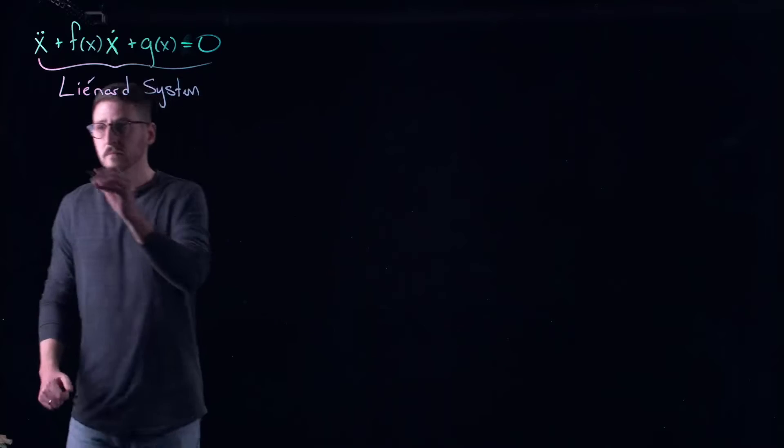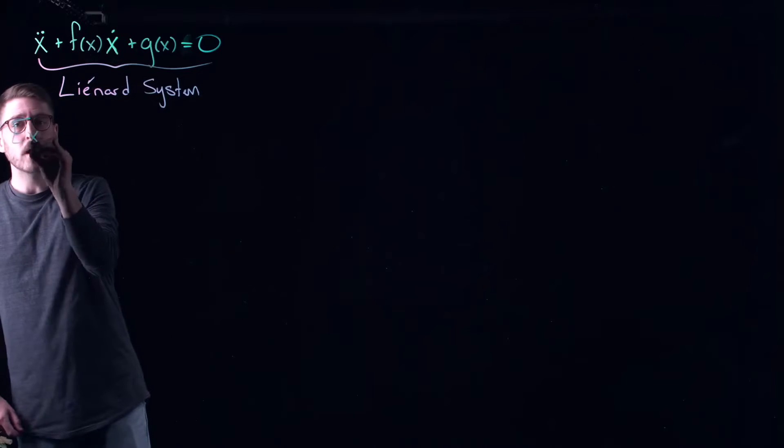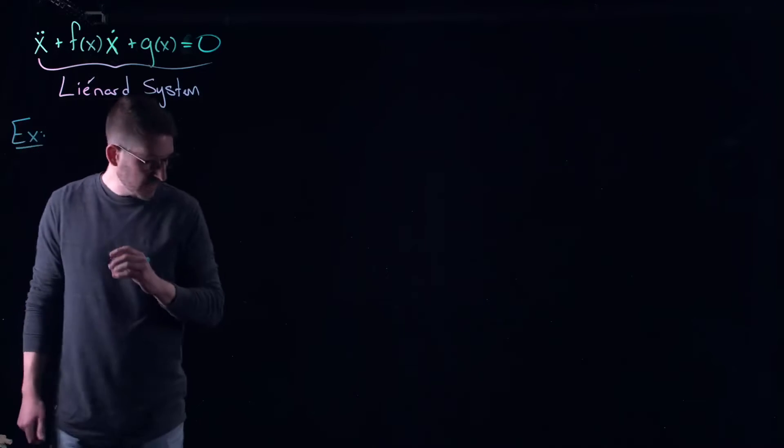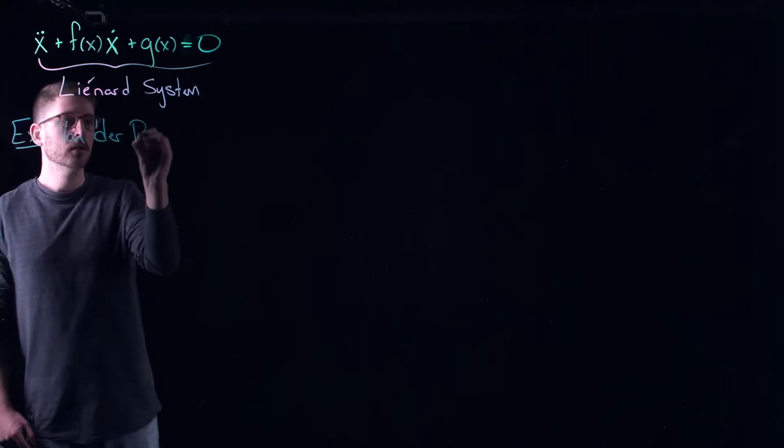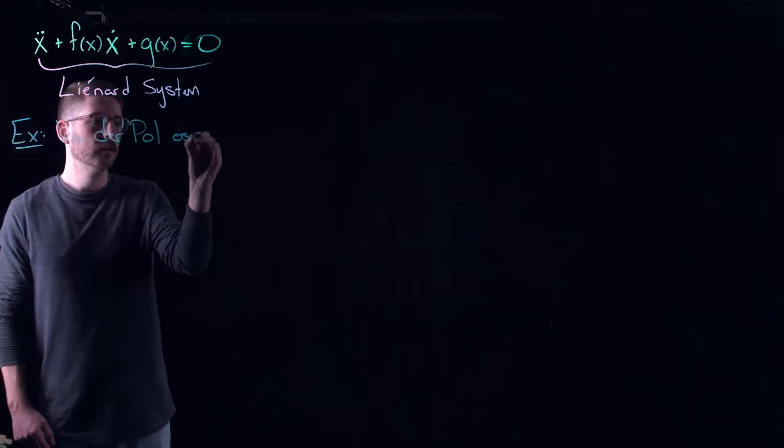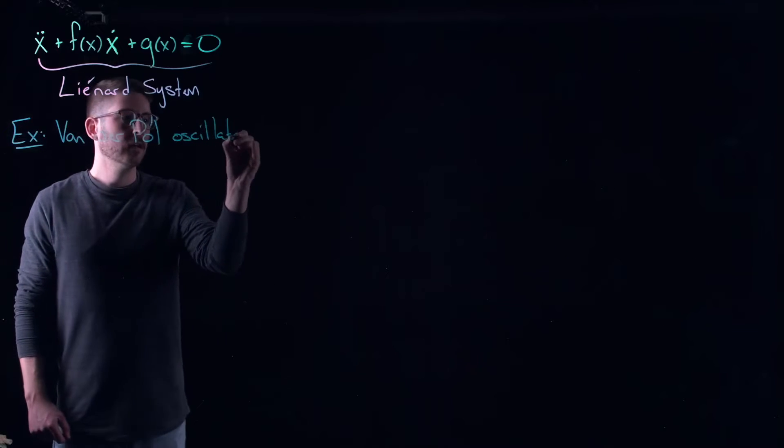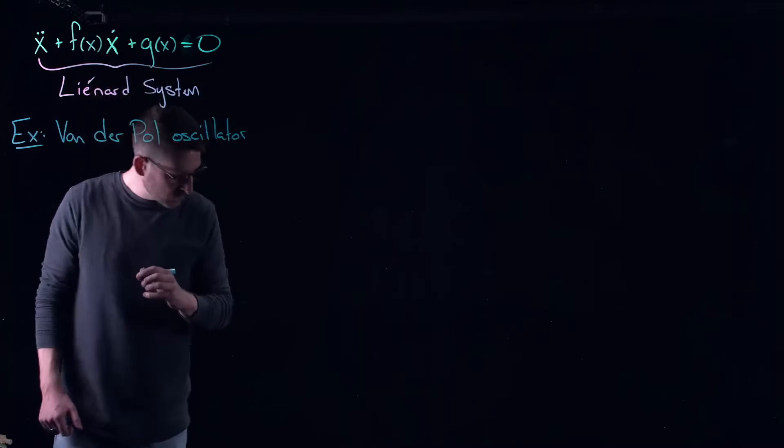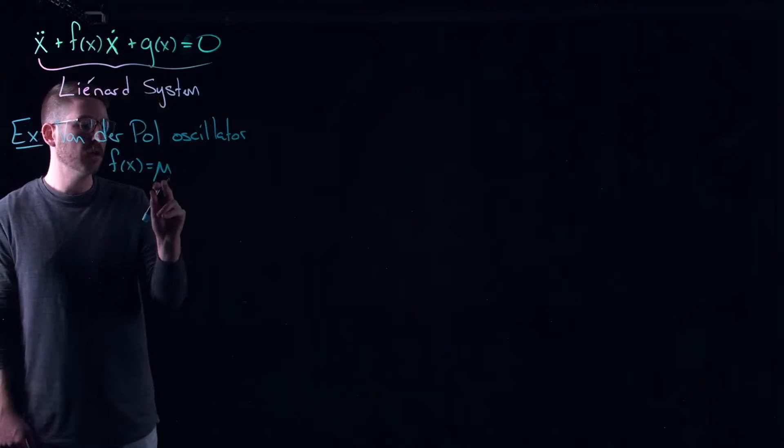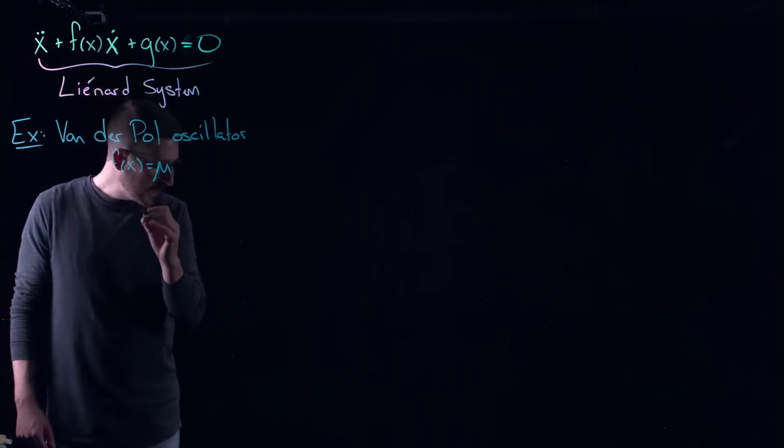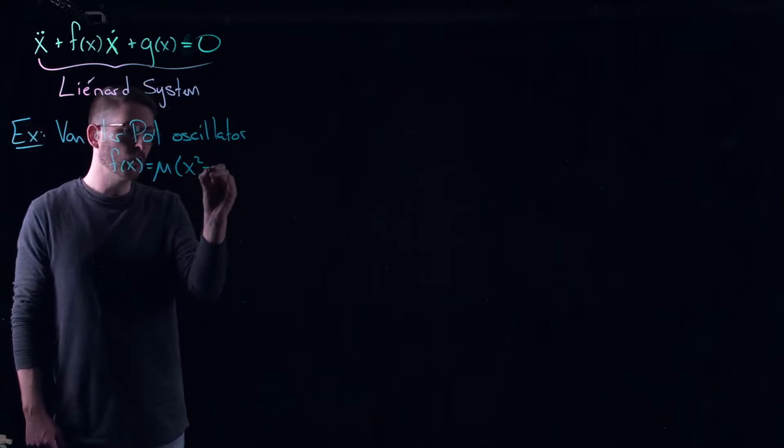So what's an example? Well we've seen one in my video on limit cycles. I introduced you to the Van der Pol oscillator. We looked at a case where in the Van der Pol oscillator f of x is mu, some parameter value, times x squared minus 1.